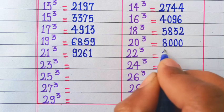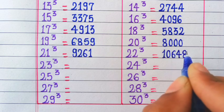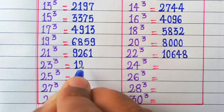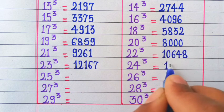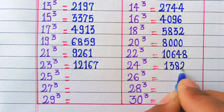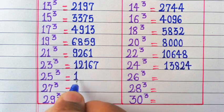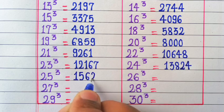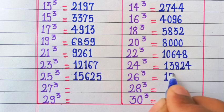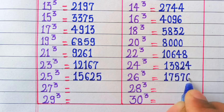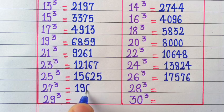22 cubed is 10648, 25 cubed is 15625, 26 cubed is 17576, 27 cubed is 19683.